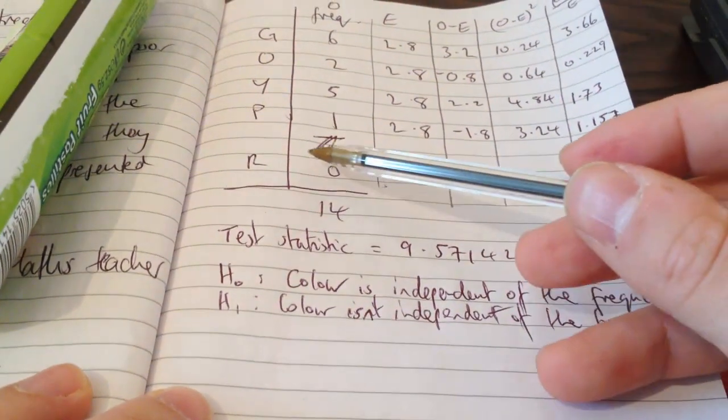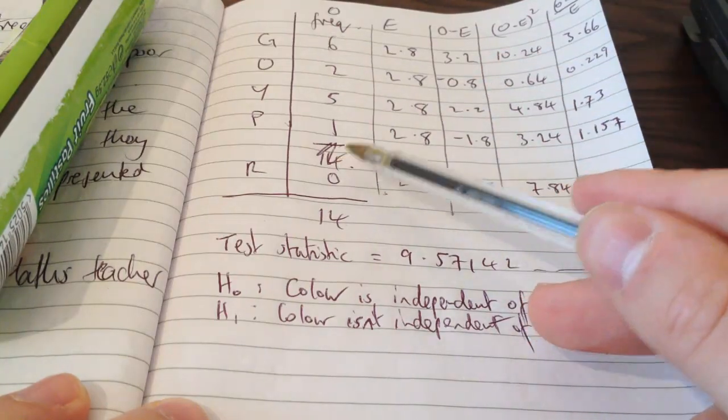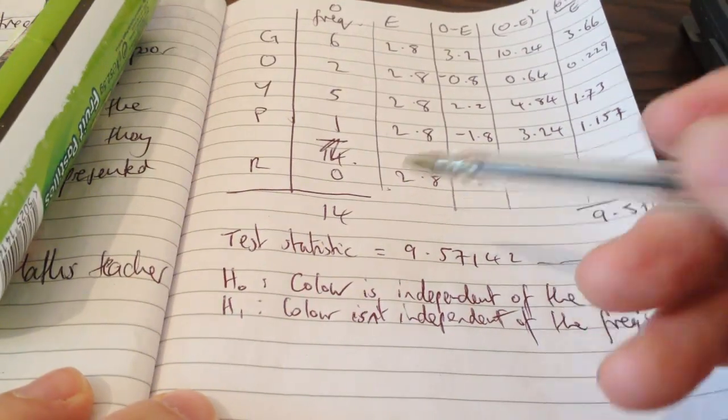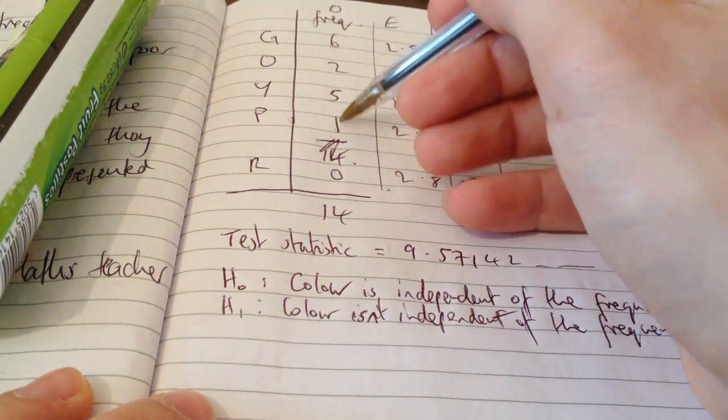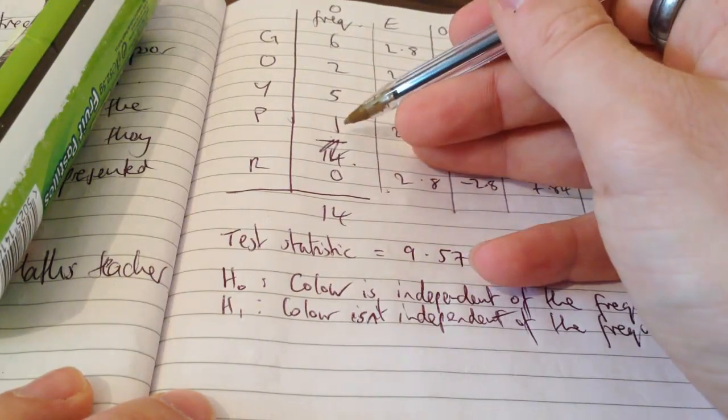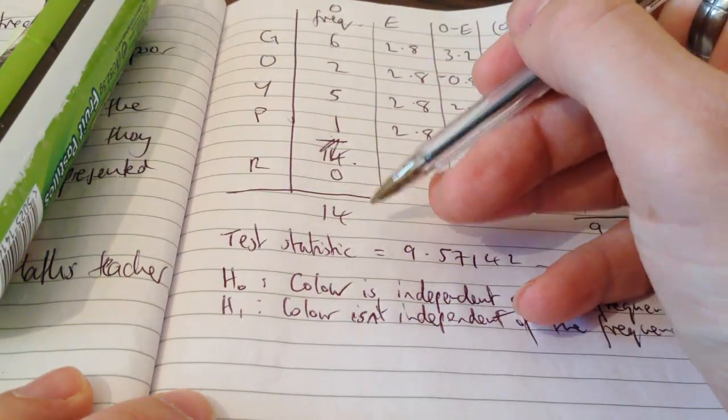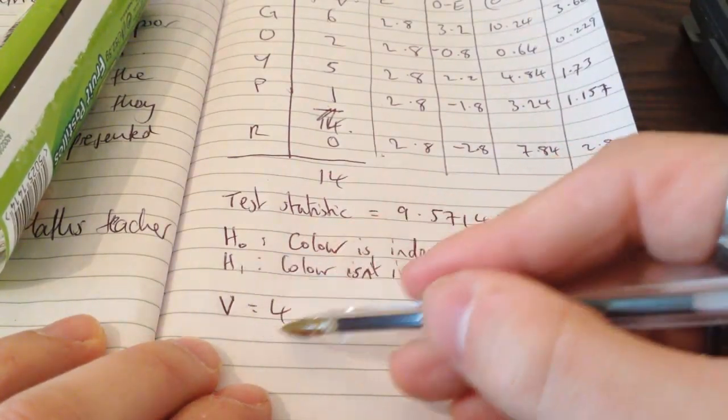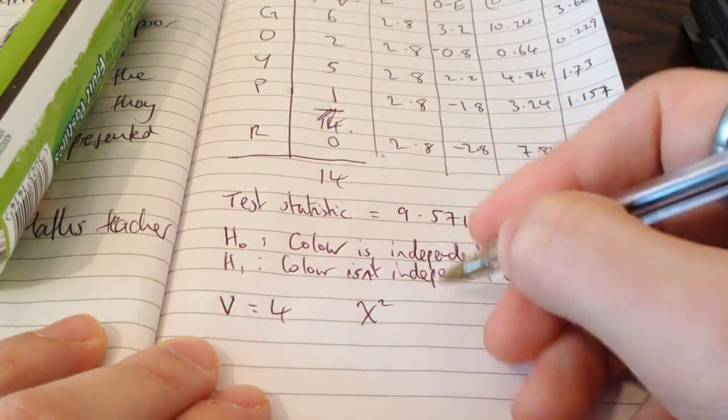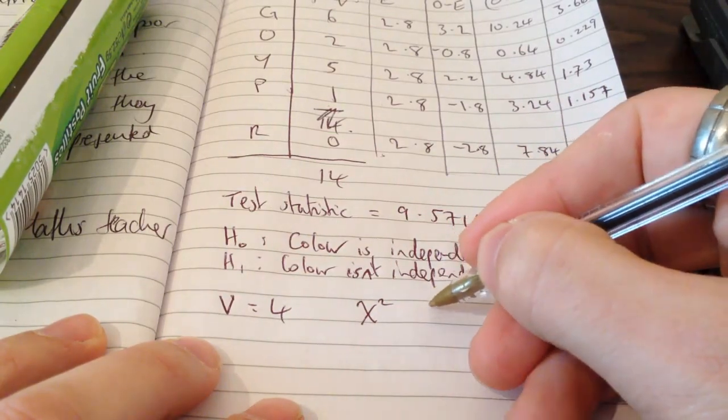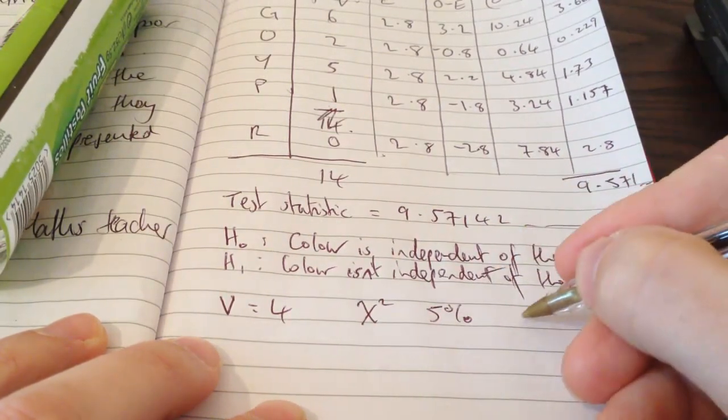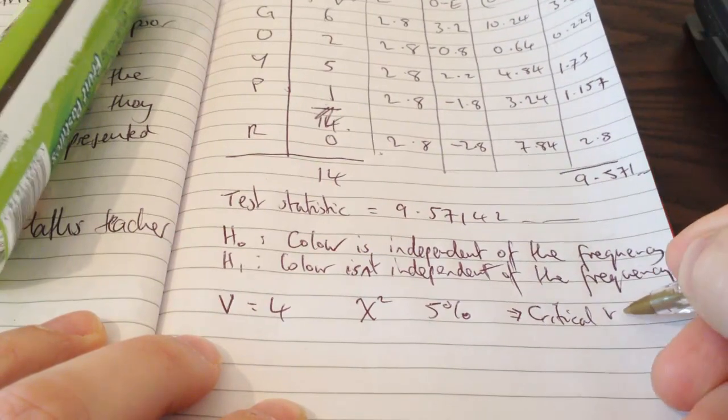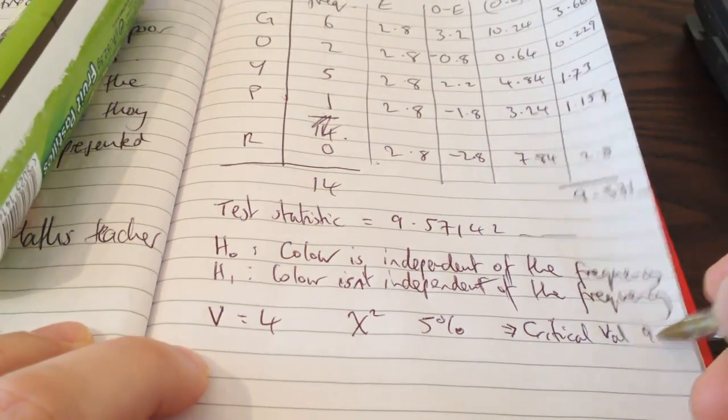I've got my test statistic. There are five variables, if you like, five colours of sweets I could have. There's always 14 sweets in the pack. So I have four degrees of freedom. I can pick any numbers I like for four of these things, and then the fifth colour of sweet has to be whatever it takes to make it up to 14. So my degrees of freedom is four. If you look these up, you can look at this on the chi-squared table. For significance I'm looking at the 5% level.